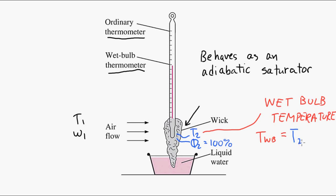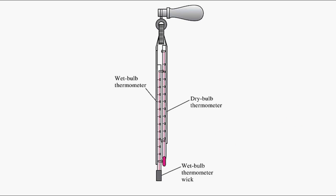So we'll abbreviate that as TWB. That's equal to T2 in an adiabatic saturator. So if we take a wet bulb thermometer and a normal thermometer, which we'll call a dry bulb thermometer, we'll get two temperatures here. The dry thermometer is the T1 of an adiabatic saturator, and the wet bulb temperature is T2 of an adiabatic saturator. So using this kind of device, we can calculate omega, or the humidity of the mixture.